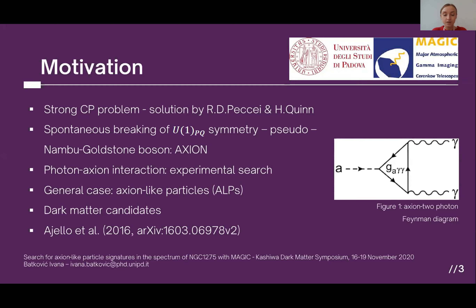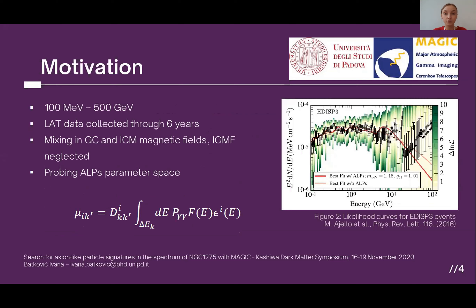What mostly motivated me was an article by Ajello et al. from 2016 from the Fermi-LAT collaboration. They did a search in the energy range from 100 MeV to 500 GeV of gamma rays, using six years of data, proposing mixing in galaxy cluster and inter-cluster medium magnetic fields while neglecting the intergalactic magnetic field. They used a part of the axion-like particle parameter space, made ALP predictions, folded them with their log-parabola spectrum fit, and calculated maximum likelihood to pose constraints on ALP parameter space, as seen in figure two.